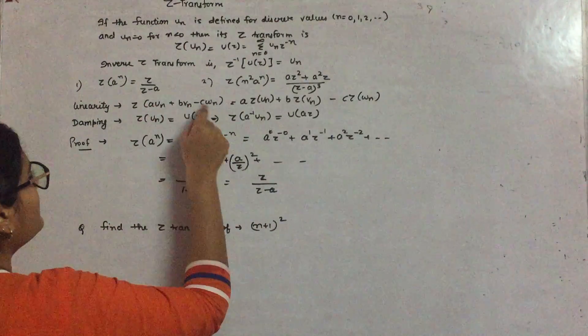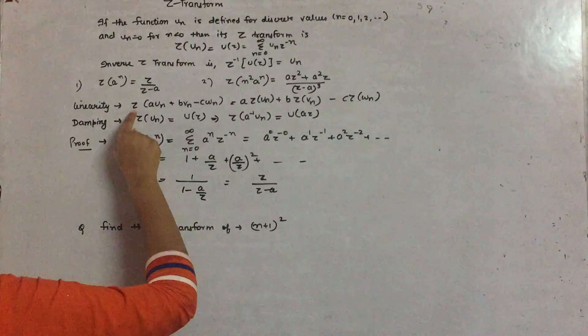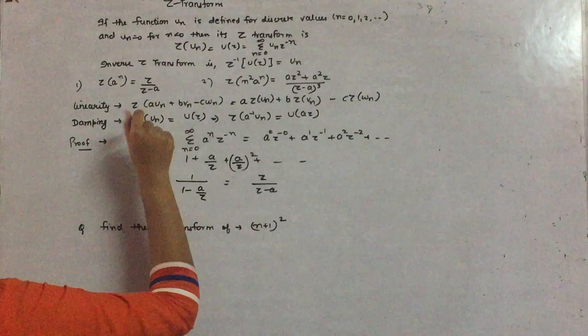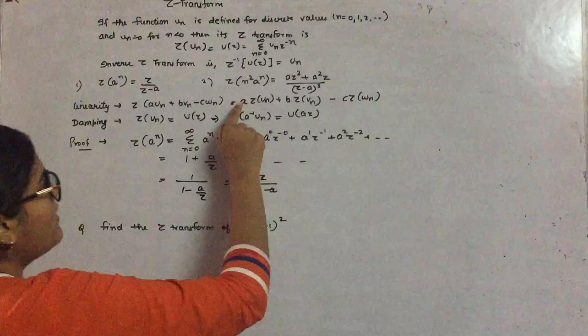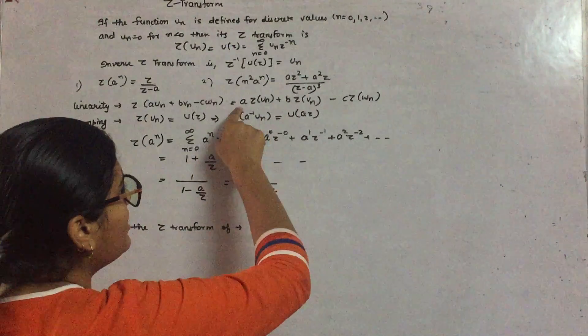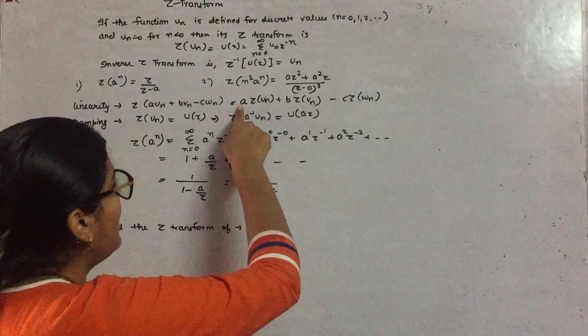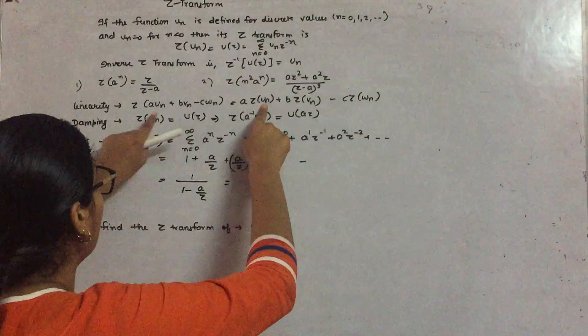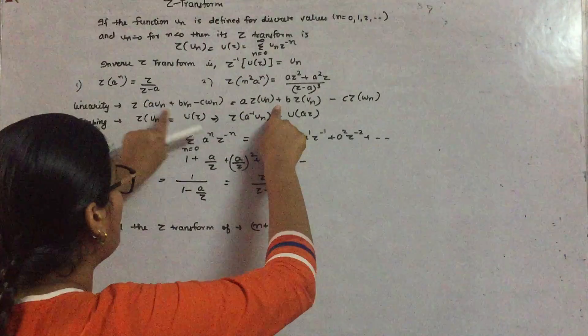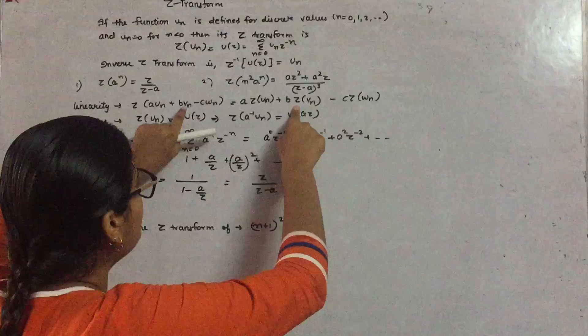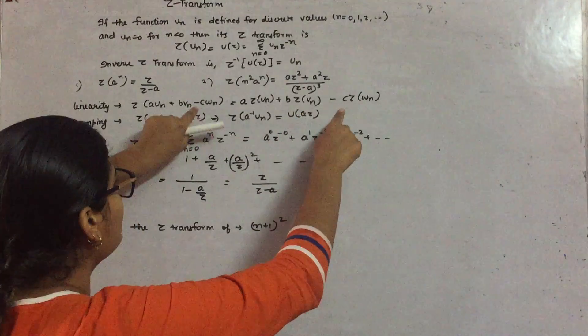Let us suppose we have a term of different variables and you have to find the Z transform of this whole term. What you have to do is take out the common constant term, and Z transform of u(n) plus b(n) becomes Z transform of u(n) plus Z transform of v(n).